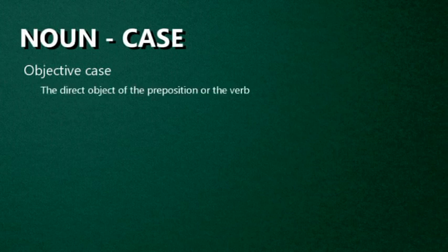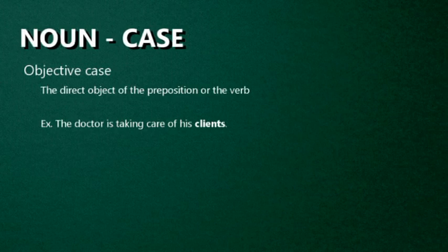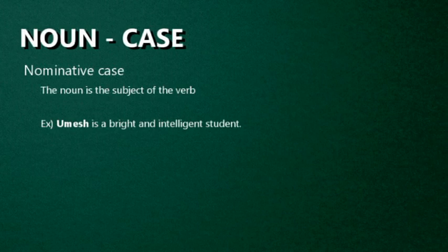Next one: Cases in Noun. Case is the grammatical function of a noun or pronoun. A noun is classified on the basis of cases, which tell us the exact position of a noun in a sentence. There are a total of five cases of nouns in the English language. First one: Objective Case. When the noun in the sentence is the direct object of a preposition or verb, then the noun is in the objective case. Example: The doctor is taking care of his clients — his clients is the direct object, so that is the objective case. Second one: Nominative Case. In the sentence, if the noun is the subject of a verb, then that is a nominative case.